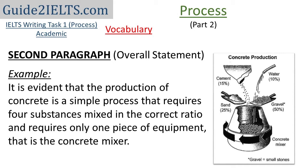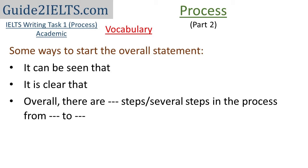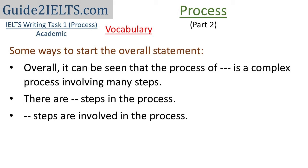A few different ways to start the overall statement: 'It can be seen that,' 'It is clear that,' 'Overall, there are these many steps,' or 'Overall, there are several steps in the process from' — and then write what the first step is and what the last step is. For example: 'Overall, it can be seen that this process is a complex process involving many steps' or 'There are these many steps involved in the process.'